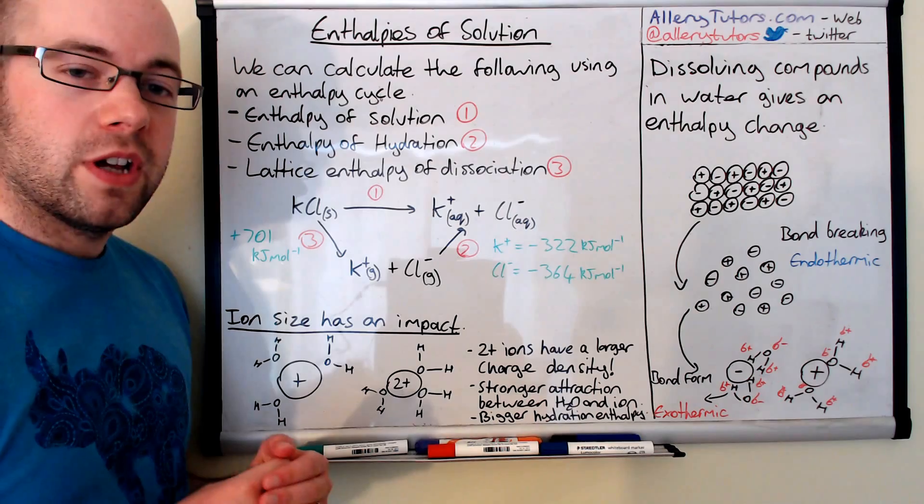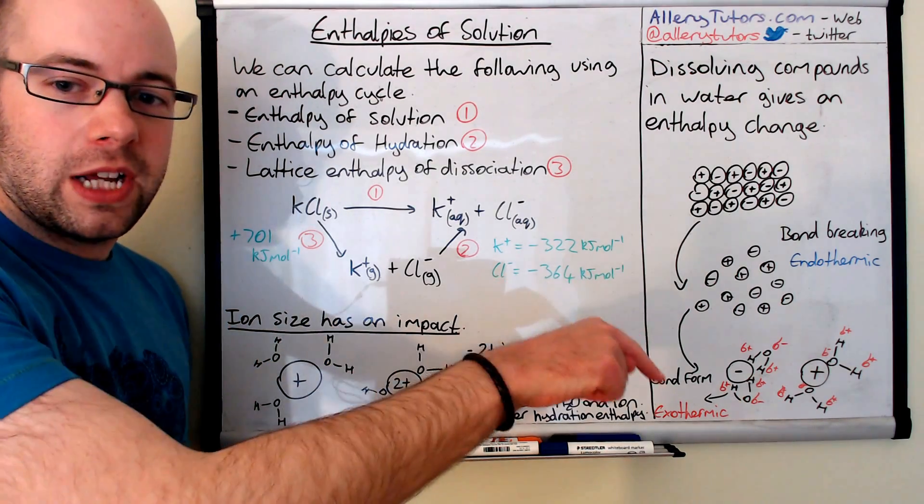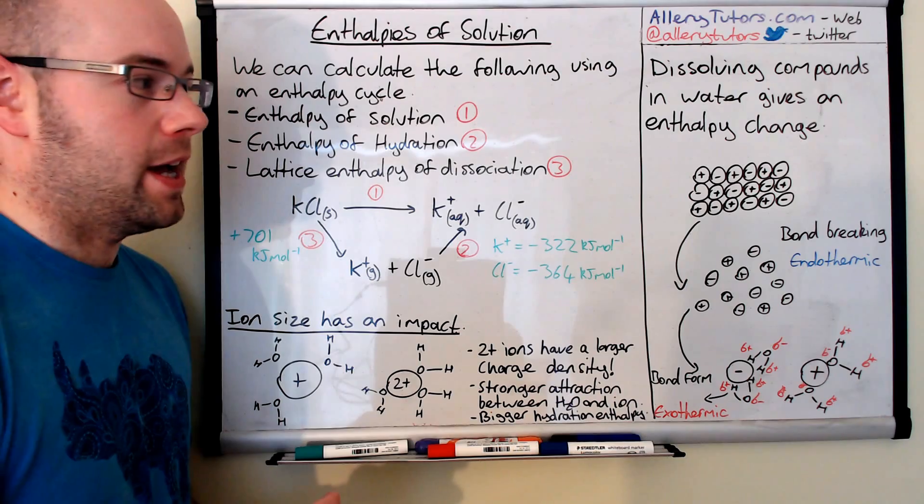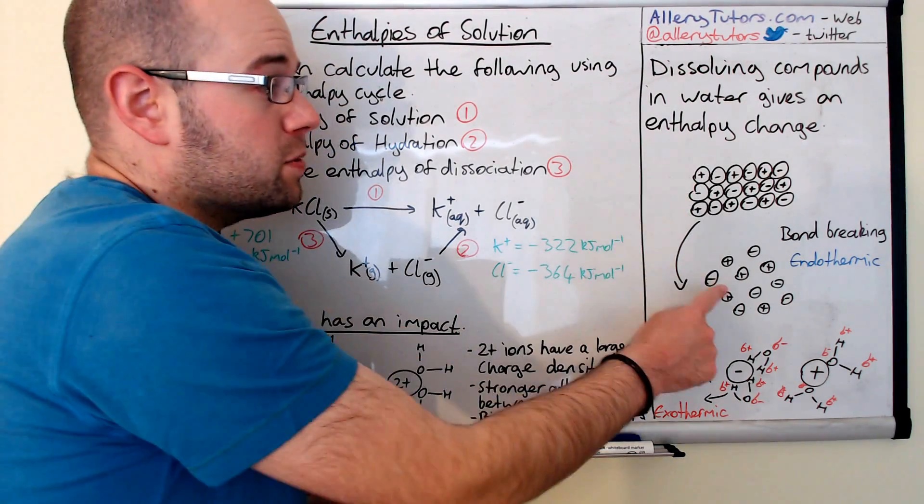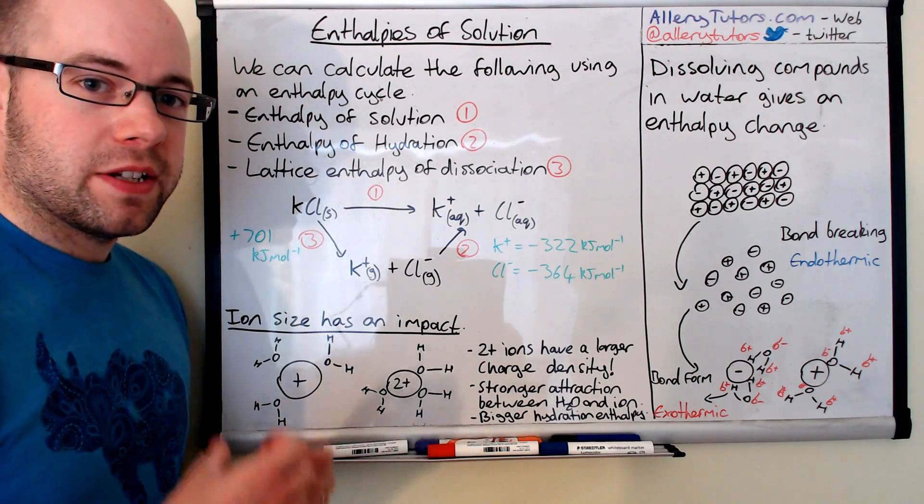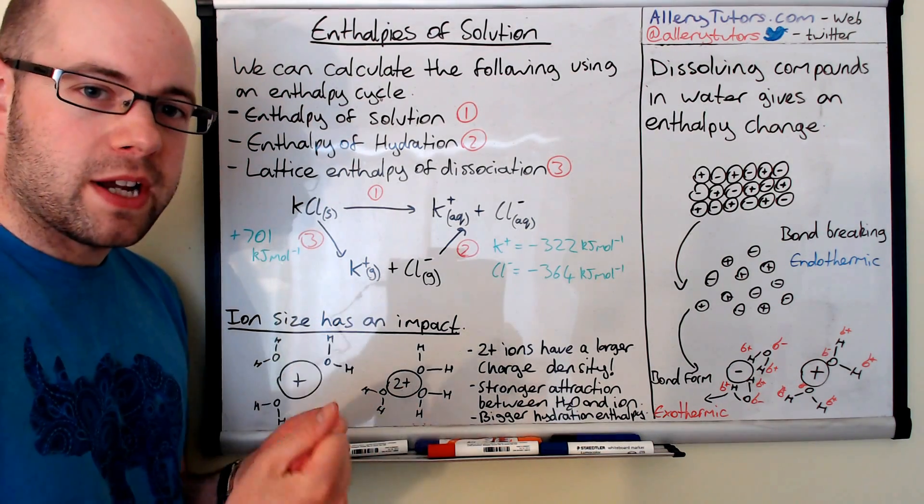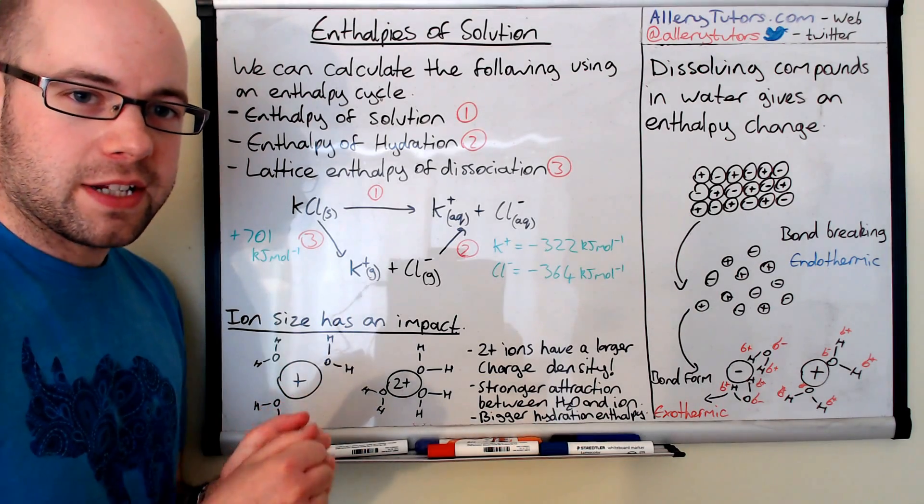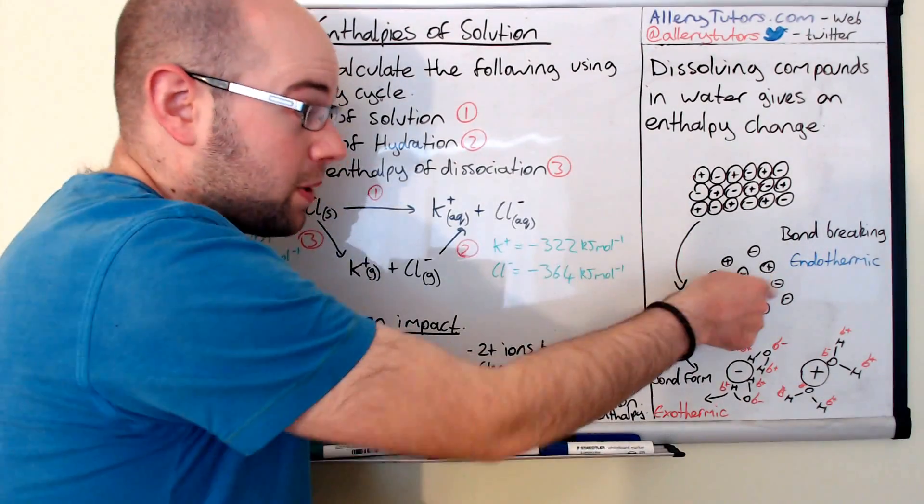So you need to know your definitions for these as well. If you're not sure of your definitions there is a video that looks into enthalpy change definitions, so just click on the link below. I'm going to assume that you know your definitions in this video. So you can see this is bond breaking. Now in bond breaking this is endothermic so it has a positive value because energy is required to break the strong electrostatic attractions between oppositely charged ions.